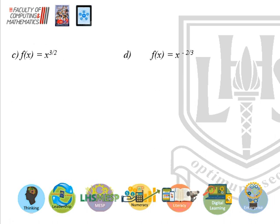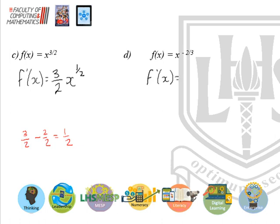Two more examples bringing in fractional powers. For f(x) = x^(3/2), f'(x) = (3/2)x to a new power. Decreasing 3/2 by 1 means taking away 2/2, so 3/2 − 2/2 = 1/2, giving f'(x) = (3/2)x^(1/2). For f(x) = x^(−2/3), f'(x) = (−2/3)x to a new power. Decreasing −2/3 by 1 means taking away 3/3, so it goes to −5/3, giving f'(x) = (−2/3)x^(−5/3).